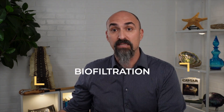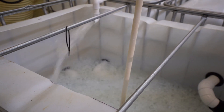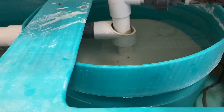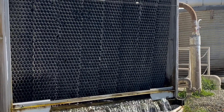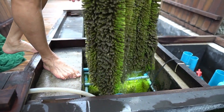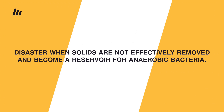Now that we've removed those small suspended particles, dissolved organics and ammonia will make their way into our biofiltration process. We selected to go with a moving bed bioreactor, also commonly referred to as an MBBR, also called fluidized media reactors. We chose to go with the small plastic K1 media, but for some systems you may see sand as a substrate. Other systems utilize trickle filters, submerged large media, or pressurized bead filters. The important point is the need to create a ton of surface area for your aerobic bacteria to colonize upon. But that same large surface area can be a disaster when solids are not effectively removed and become a reservoir for anaerobic bacteria.